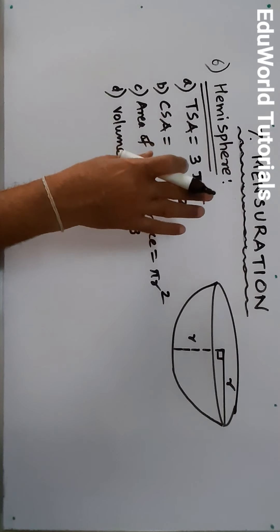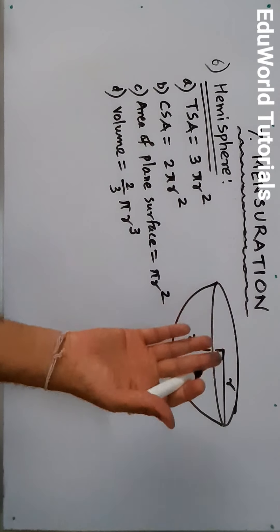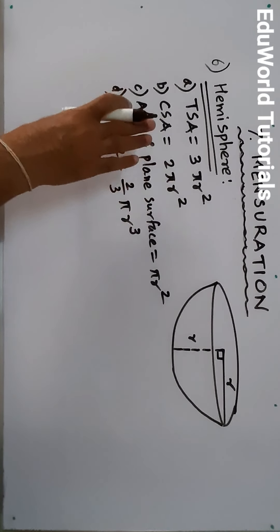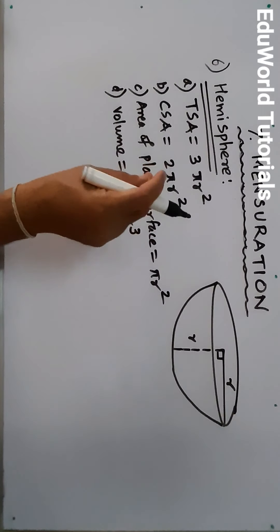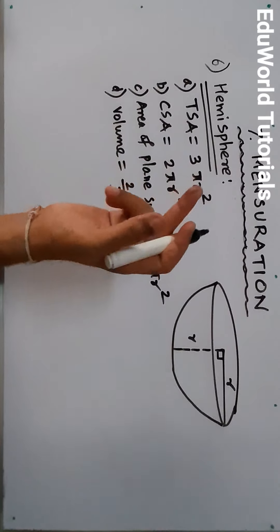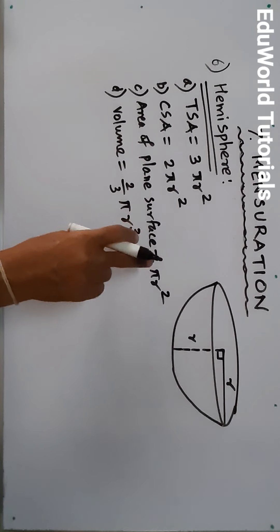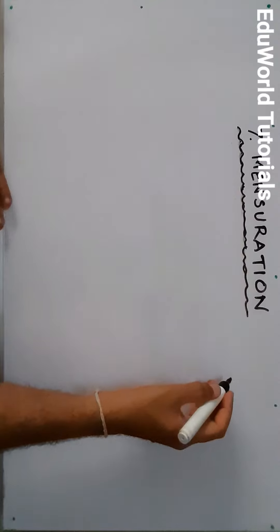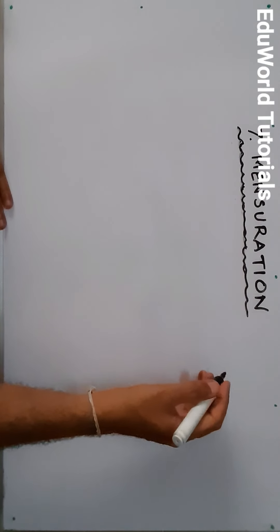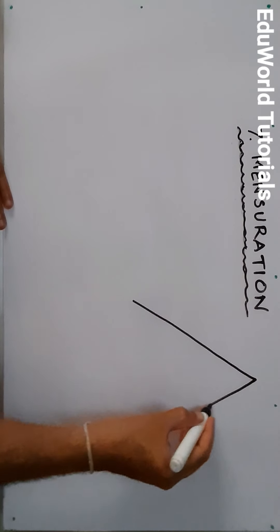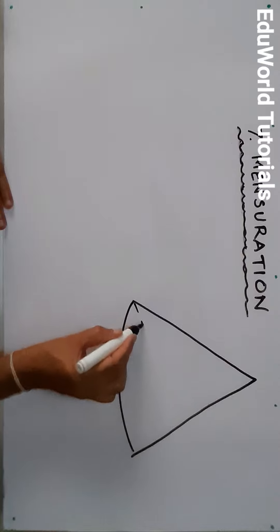In this chapter we have seen six solid figures: cuboid, cube, right circular cylinder, cone, sphere, and hemisphere. There will also be formulas for the plane figures, but these are the six solid figures whose formulas are very important. There is one more solid figure — the seventh — which is called the frustum of a cone. I will first draw a cone and explain what a frustum of a cone is.